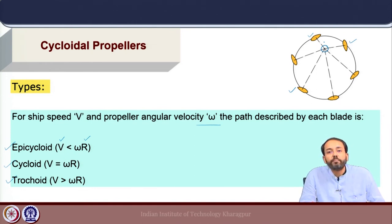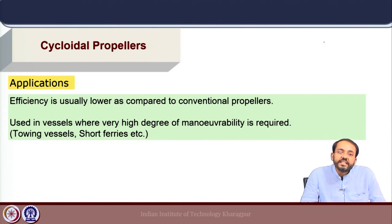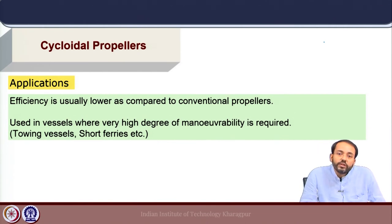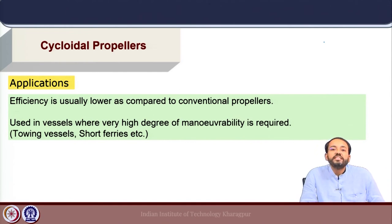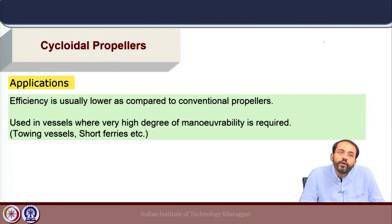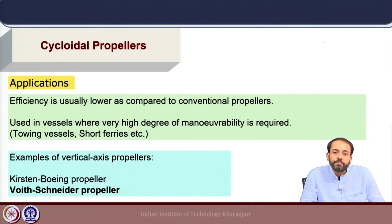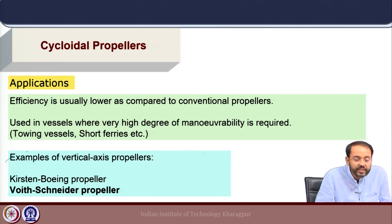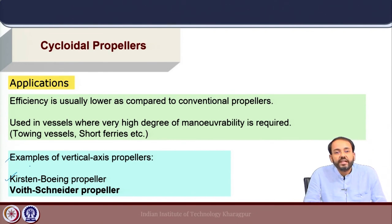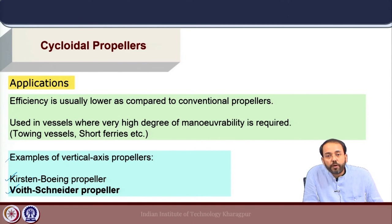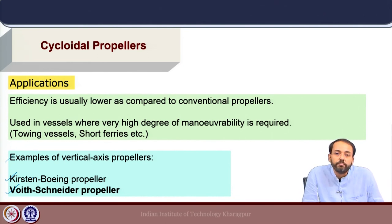A steering center governs the path of the propeller blade for different operating conditions, directing the thrust as required for forward motion or maneuverability. The efficiency of cycloidal propellers is generally lower compared to conventional propellers, so they are used in specific vessels where a very high degree of maneuverability is required that is not possible with a conventional propeller and rudder system. Typical applications are towing vessels and short sea ferries. Design examples include the Kirsten-Boeing propeller and the Voith-Schneider propeller, which has been effectively applied to tugs and ferries for excellent maneuverability performance.